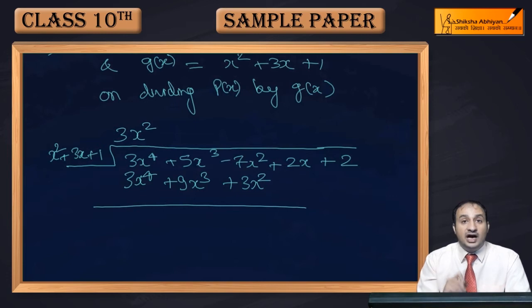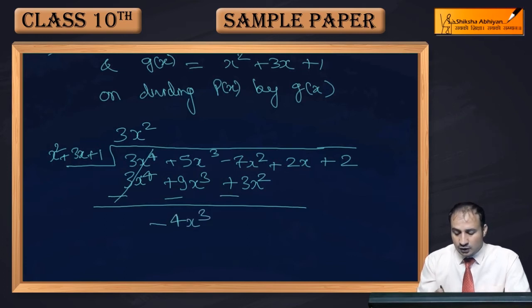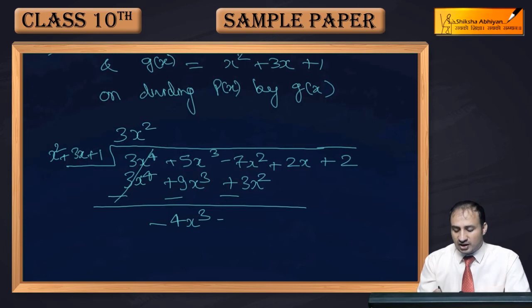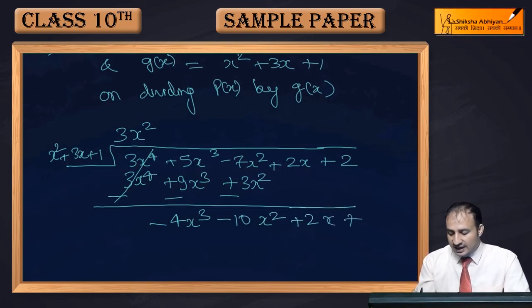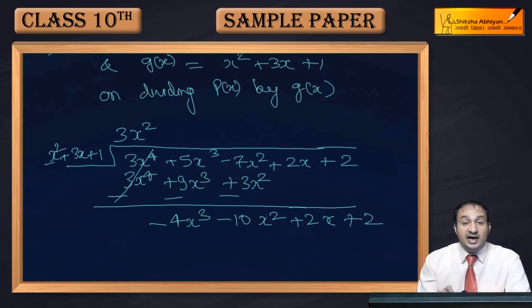Now we perform subtraction. After subtracting, 3x⁴ cancels out. Then 5x³ - 9x³ gives -4x³. Then -7x² - 3x² gives -10x². Bringing down the remaining terms: +2x and +2 come down as they are.